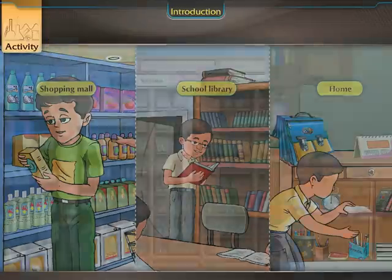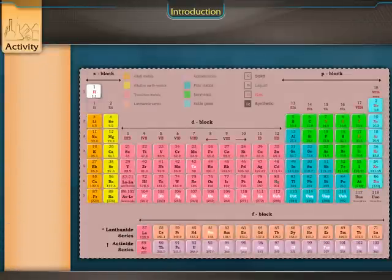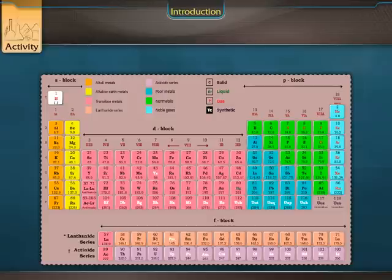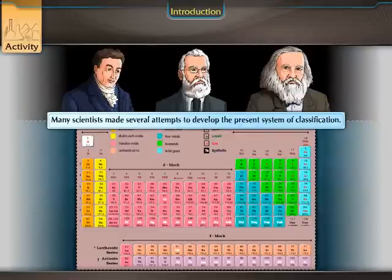In the same way, elements are classified in a systematic way to study their properties. But this classification did not happen in one day. Many scientists made several attempts to develop the present system of classification.